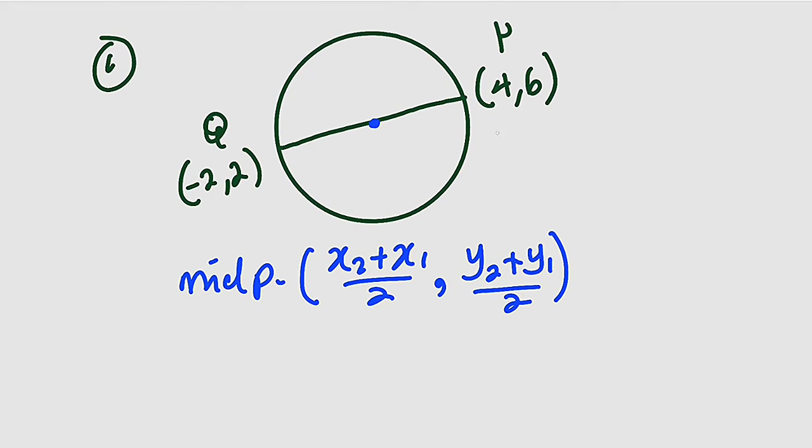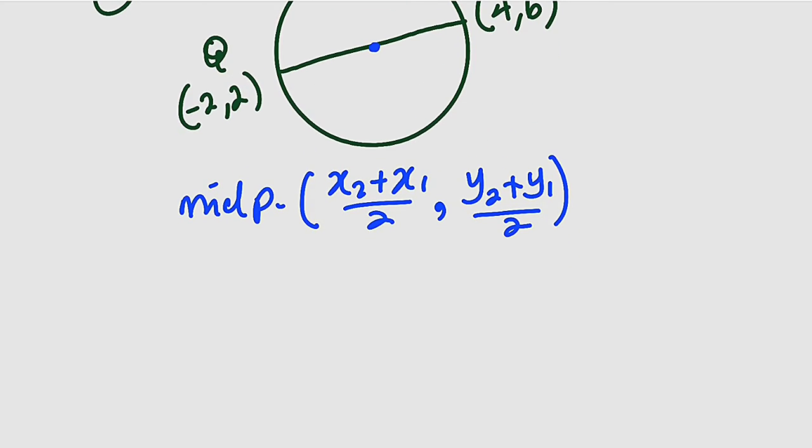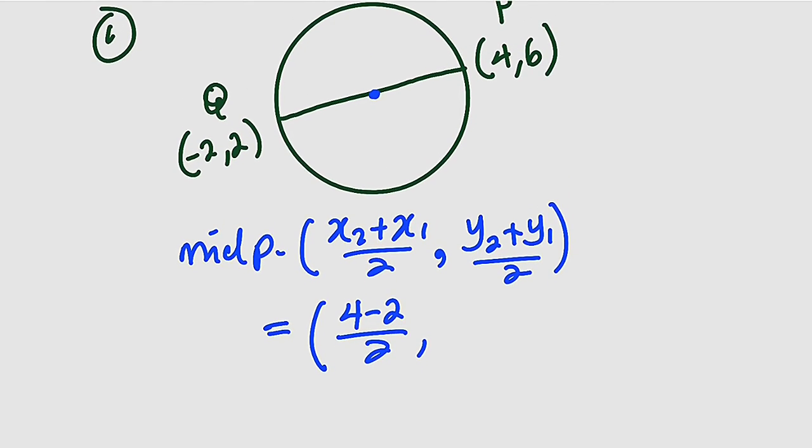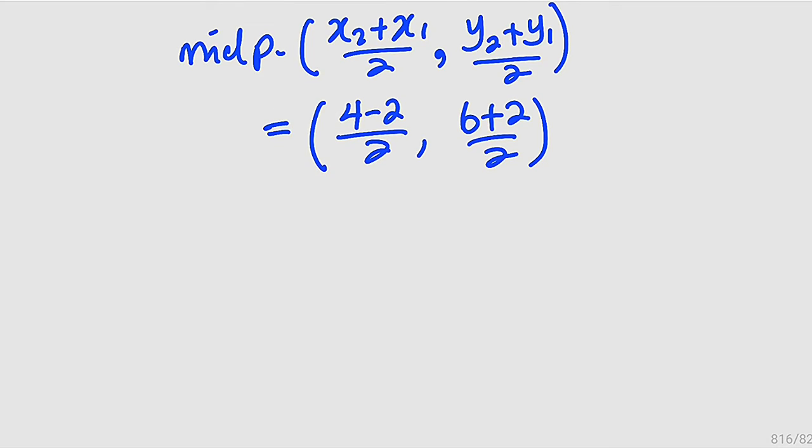We can start with either point. Let me start here. Here we take 4 for x and -2 for x from the other side. We add them. We divide by 2, which equals (4-2)/2. Then the y coordinate will be (6+2)/2.